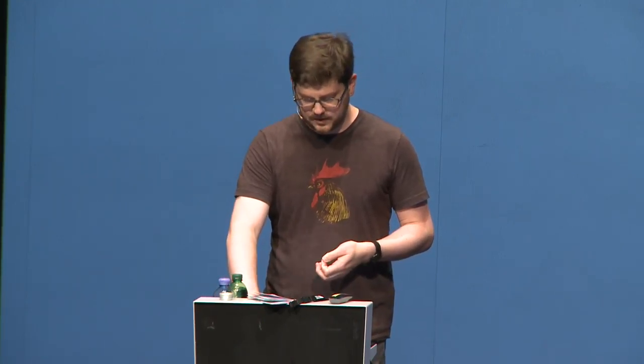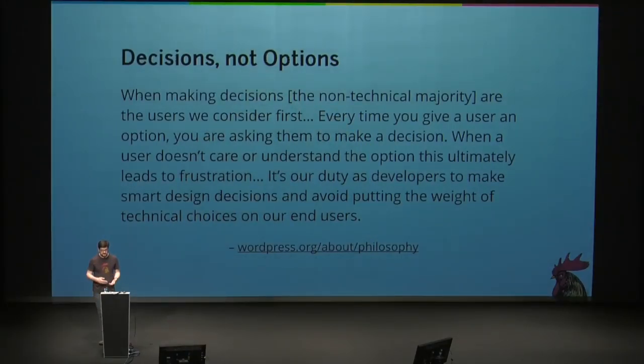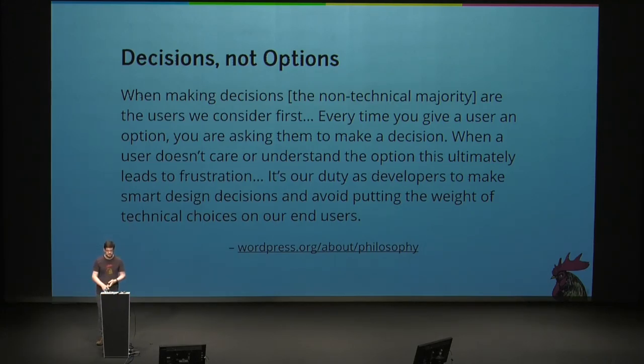WordPress as a core product, as we've been hearing this week, is designed with focus. Mike Schroeder shared the development philosophy stated on WordPress.org: WordPress should work out of the box. It's designed for the majority, and the core product strives for lean simplicity. My personal favorite precept is to favor decisions over options. Every time you give a user an option, you're asking them to make a decision, and decisions take cognitive energy away from what they came to WordPress to accomplish. Nobody installs a piece of software to customize it — they install it to get through the customization and achieve the goal they set out to do.